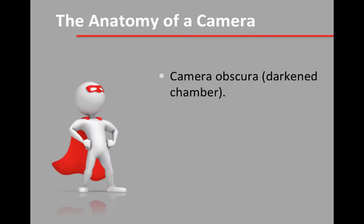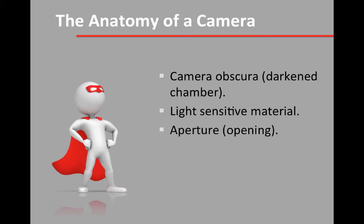Let's recap on those components of a camera. First, we have our camera obscura, which is just a darkened chamber. Second, light-sensitive material to record the image projected onto the back. Third, an aperture to allow light to enter and allow the image to form. Fourth, a shutter to prevent light from continually exposing the light-sensitive material. Fifth, a lens so that we get a more highly-resolved image rather than a simple pinhole. And the viewfinder to frame the image. Later in the lecture series we'll unpack what those features do to image making, how we apply them to photography, and how they give us greater control and creativity.